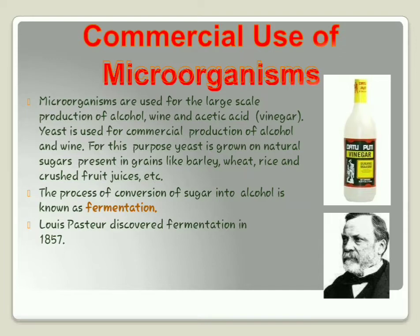For this purpose, yeast is grown on natural sugars present in grains like barley, wheat, rice, and crushed fruit juices. The same yeast used to make bread is also used to prepare all types of alcohol, wine, and acetic acid. This is because yeast has the property of undergoing anaerobic respiration — a characteristic we studied last year.